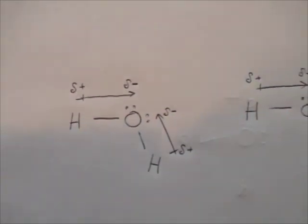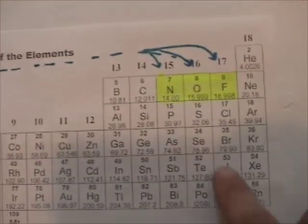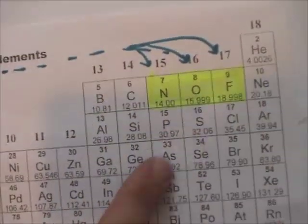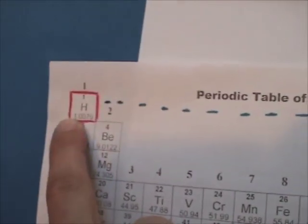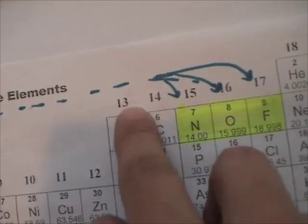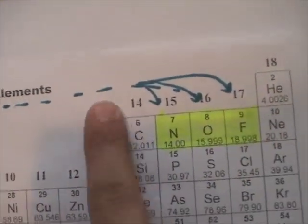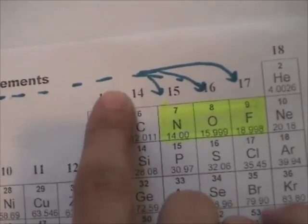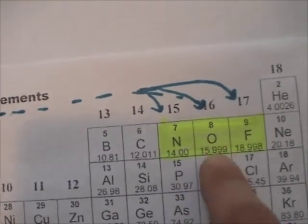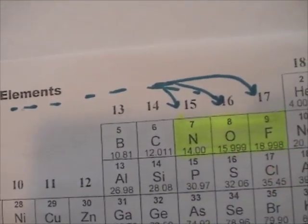We can remember our periodic table. The most electronegative is fluorine, oxygen, chlorine, and it goes up towards the fluorine. Hydrogen is over here on the periodic table, but really we should put the hydrogen up here near the boron and carbon when we're discussing electronegativity trends. Still, the oxygen is more electronegative than the hydrogen, so the arrow always points toward that more electronegative atom.